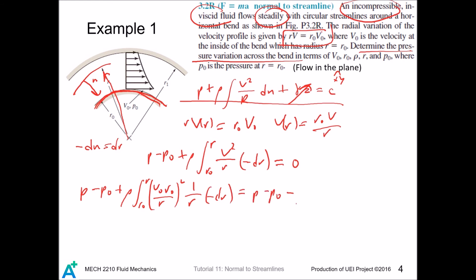We simplify a bit. We have p as a function of r equals p naught plus rho r naught squared v naught squared divided by two times one minus r naught divided by r squared.